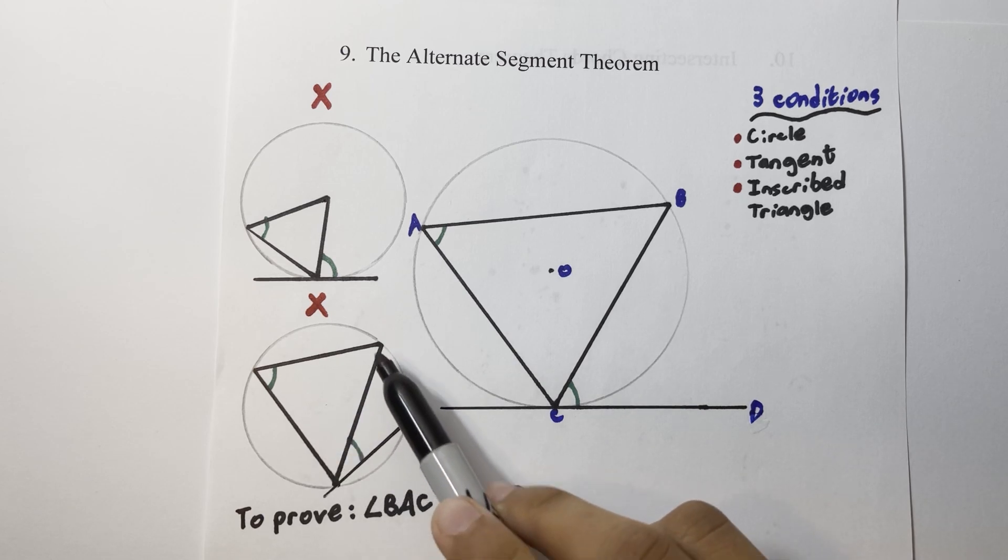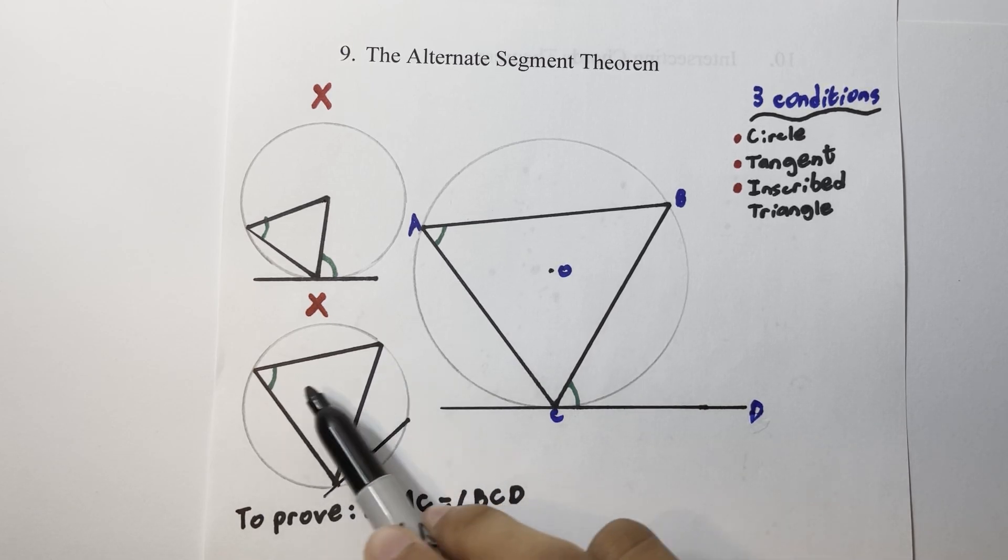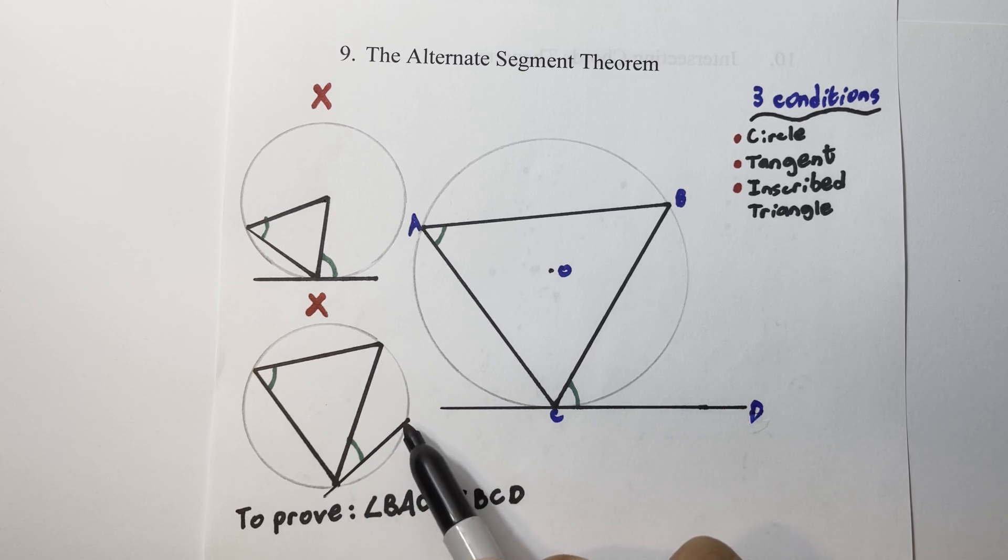In the second example here, we do have a circle, and we do indeed have an inscribed triangle, however this line here is not a tangent, it's what's called a secant, a chord which only touches the circle at two points before extending out past the circumference. So again, this does not follow the Alternate Segment Theorem.